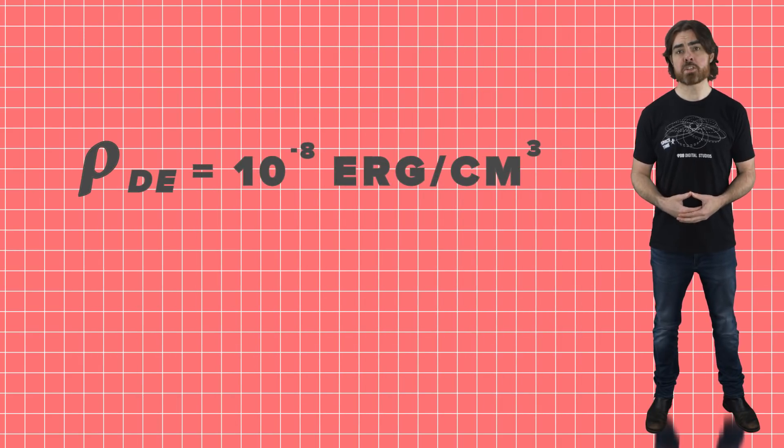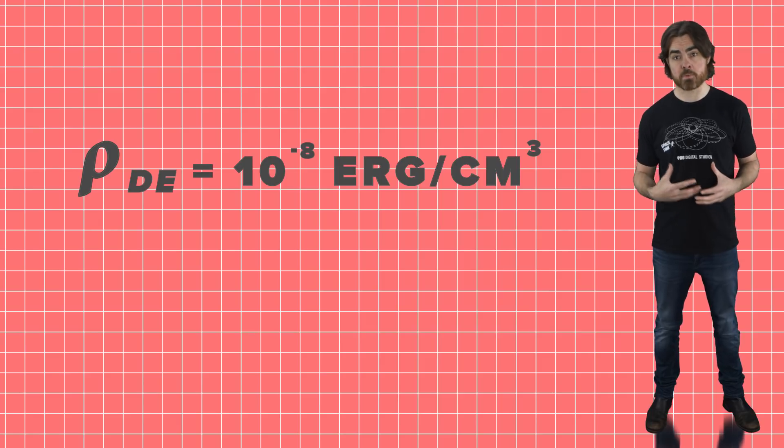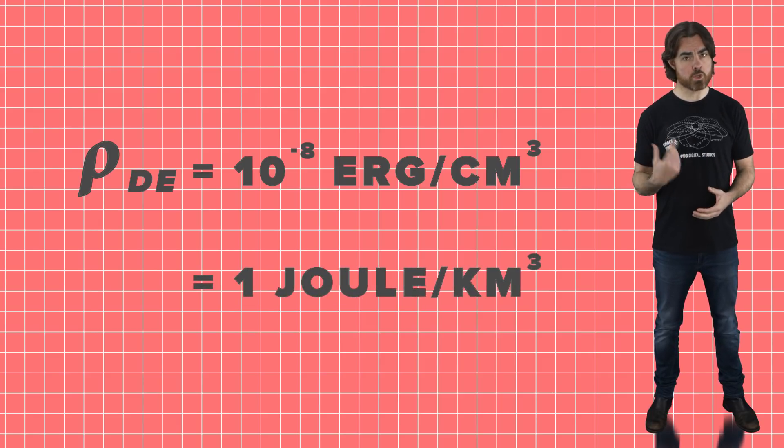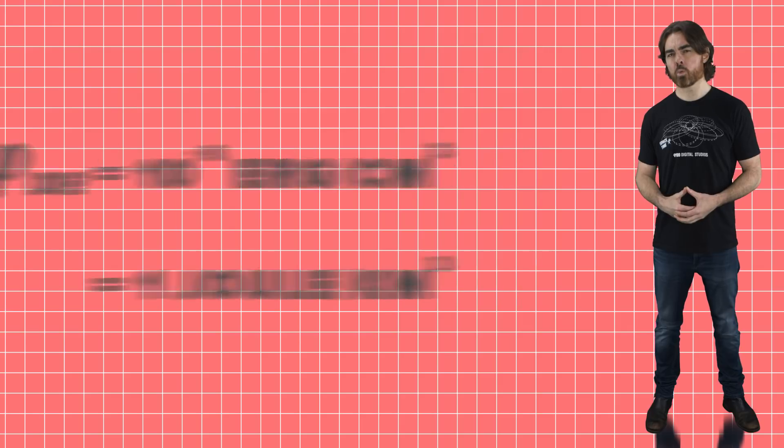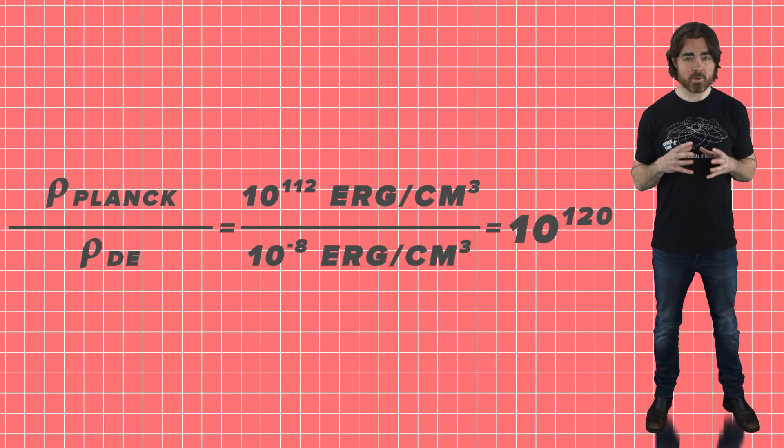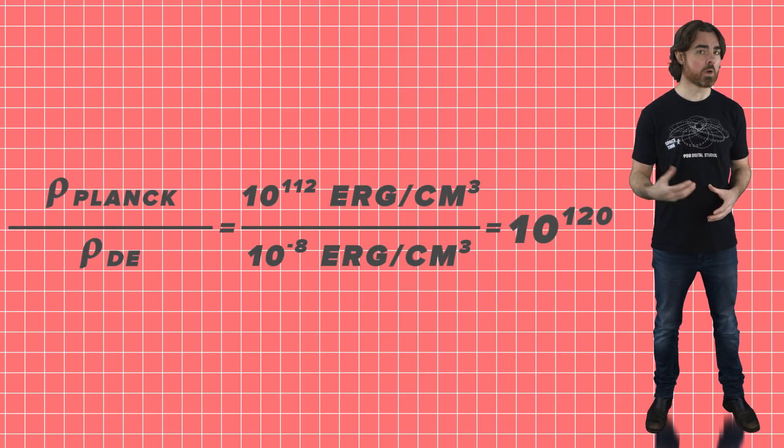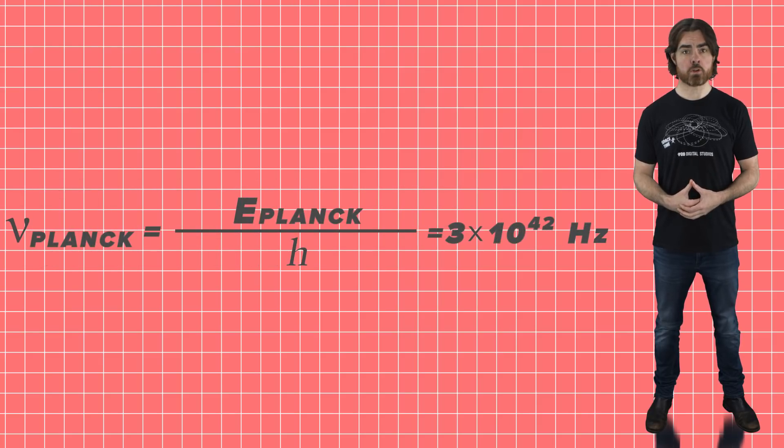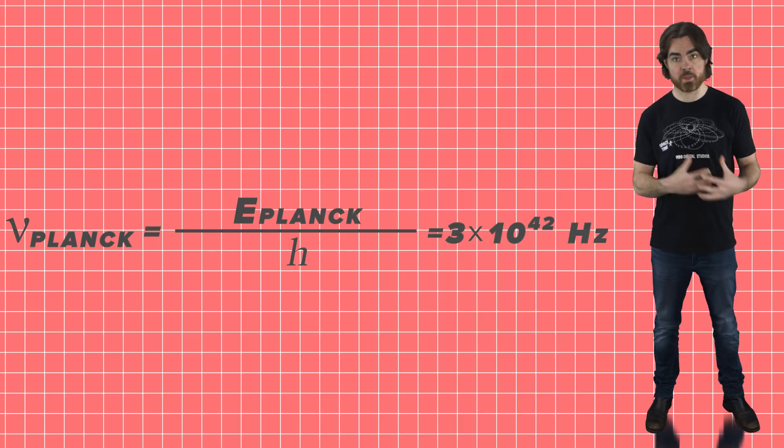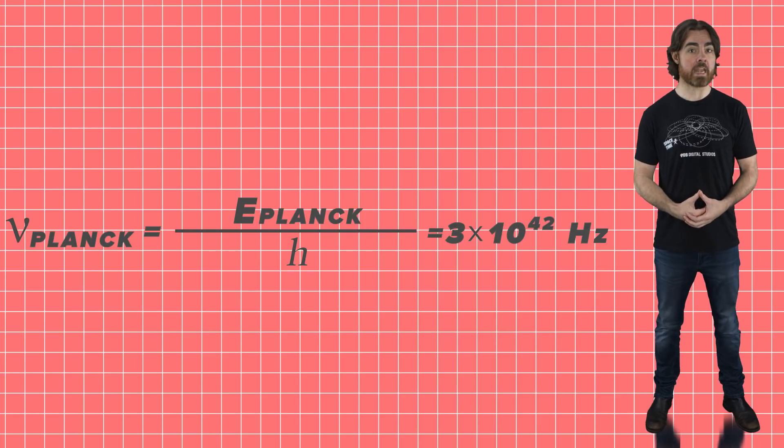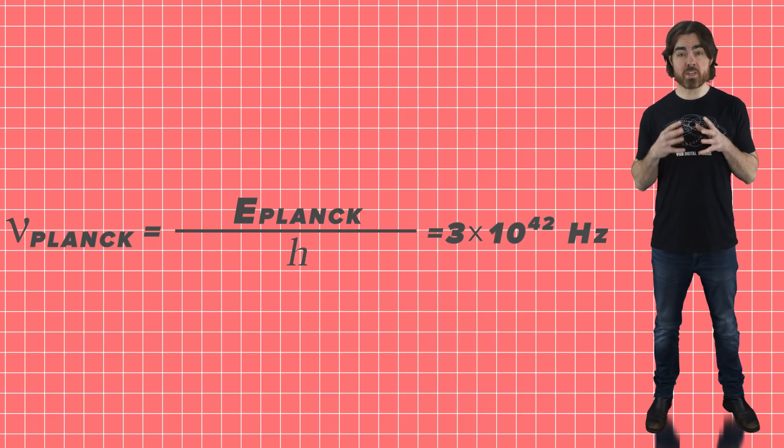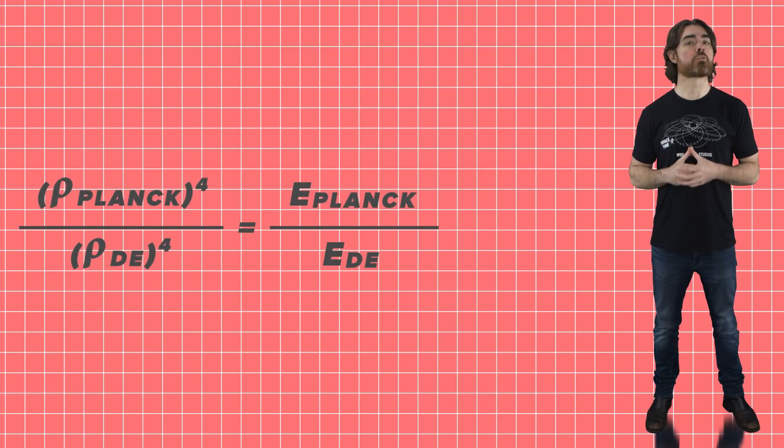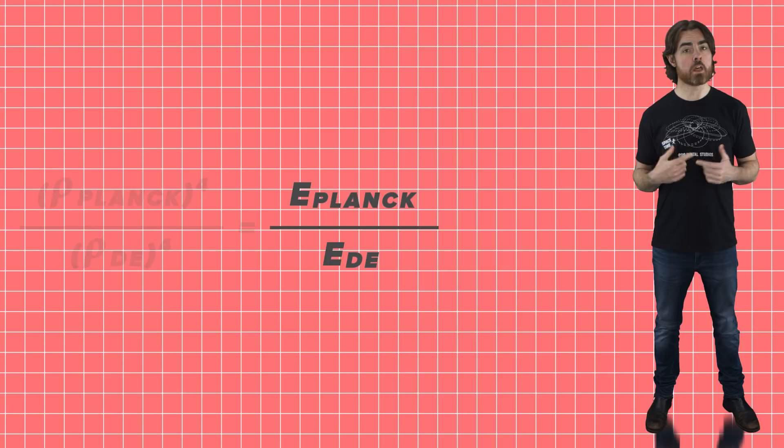Okay, so the energy density implied by dark energy is around 10 to the power of minus 8 ergs per centimeter cubed or one joule per cubic kilometer, which is a surprising 120 orders of magnitude lower than the theoretical estimate I just mentioned. The frequency of a photon with the Planck energy is the Planck energy divided by the Planck constant or an insane 3 by 10 to the power of 42 hertz. And if vacuum energy is proportional to the fourth power of cutoff frequency, then this equation gives the relationship we need.